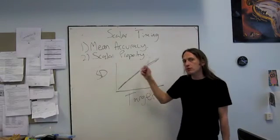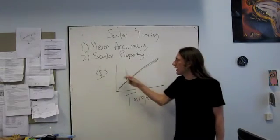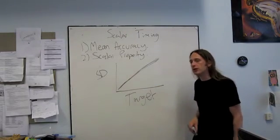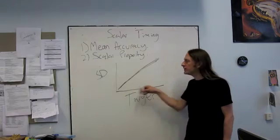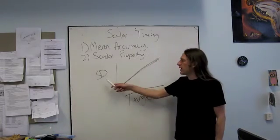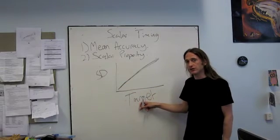But the scalar property is saying something more stronger than that. It's saying that if I double the target time, I should double the amount of variability. So how do we test this? Well, what we need to do is to divide the standard deviation by the target time.